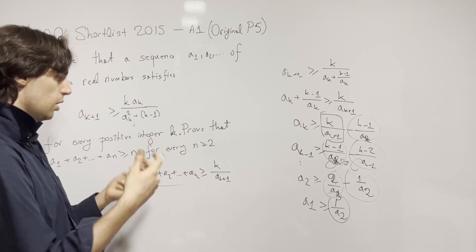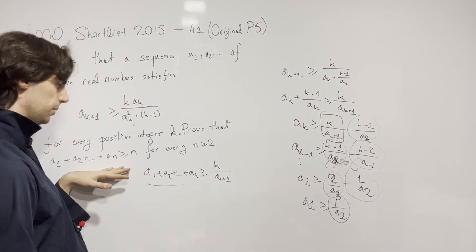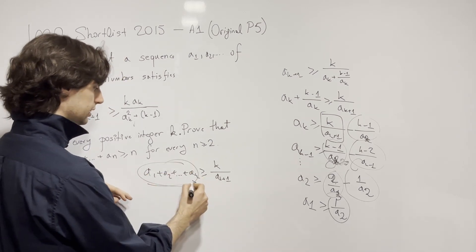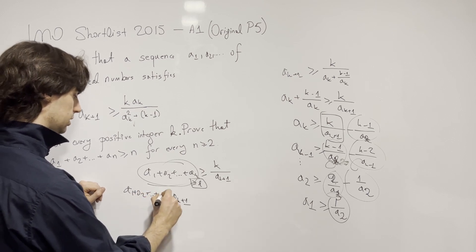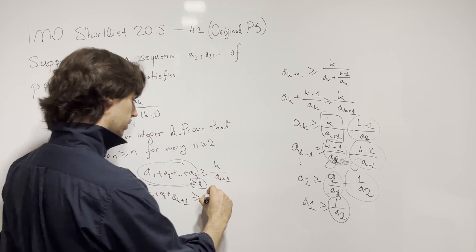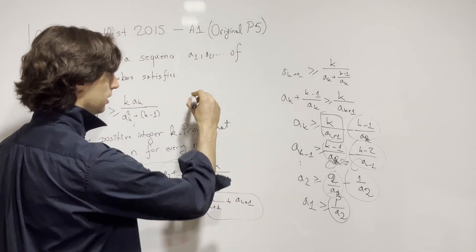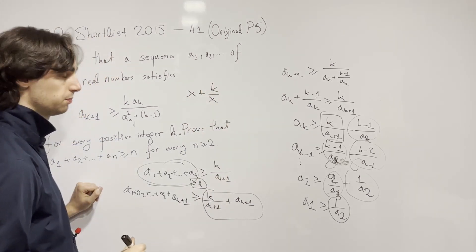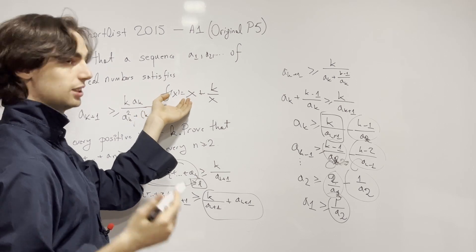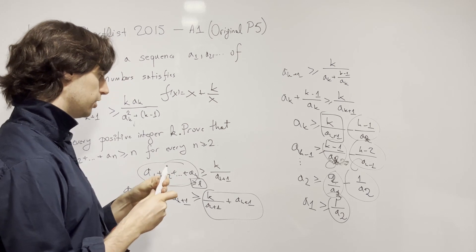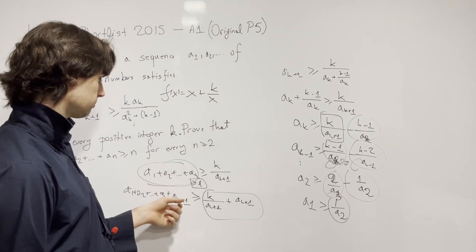Here is where the problem is essentially finished. We need to prove a₁ + ⋯ + aₙ ≥ n. Say we've shown the sum up to k is ≥ k. Now for aₖ₊₁, we add it to get a₁ + ⋯ + aₖ + aₖ₊₁ ≥ k/aₖ₊₁ + aₖ₊₁ — this is a function of the form f(x) = x + k/x. If aₖ₊₁ ≥ 1, we're done immediately. But what if aₖ₊₁ < 1?